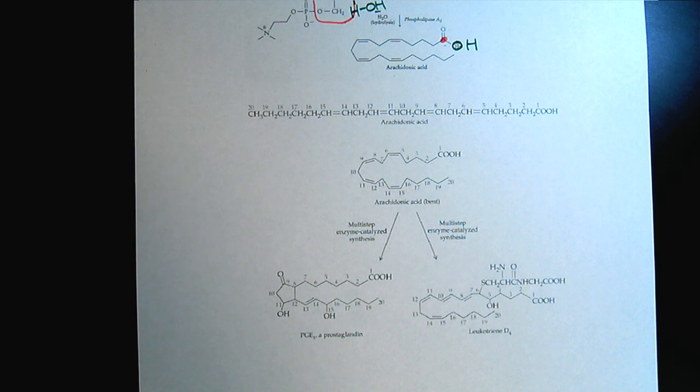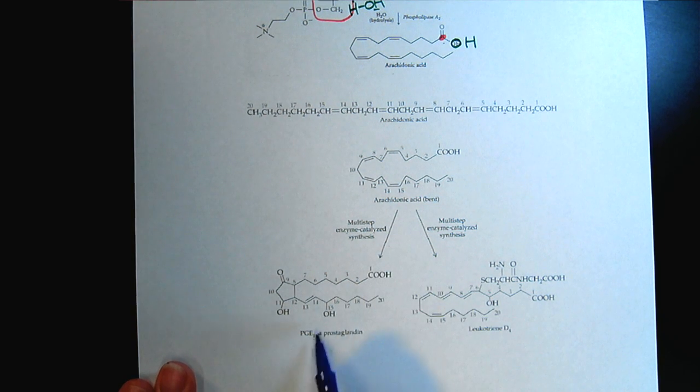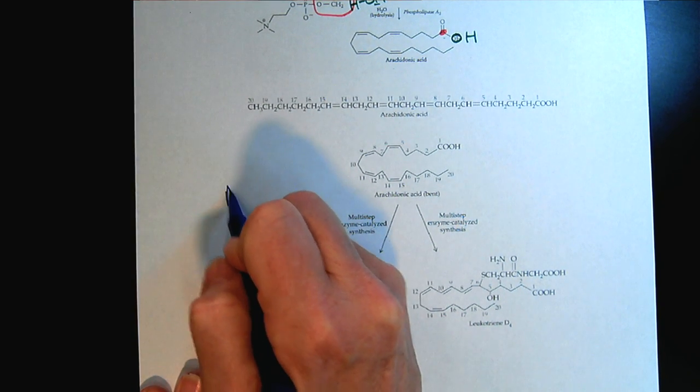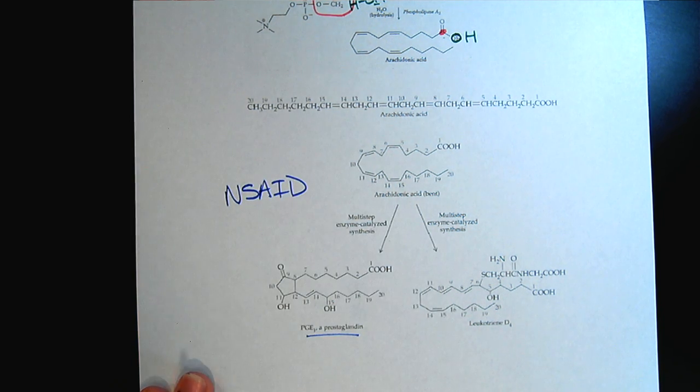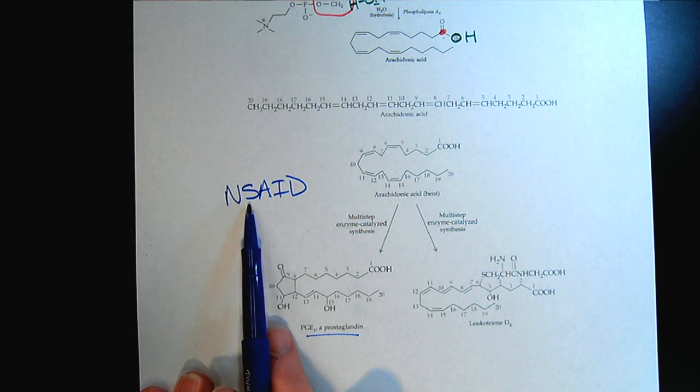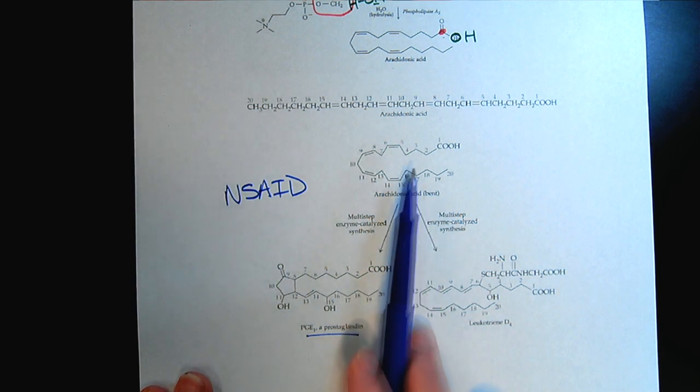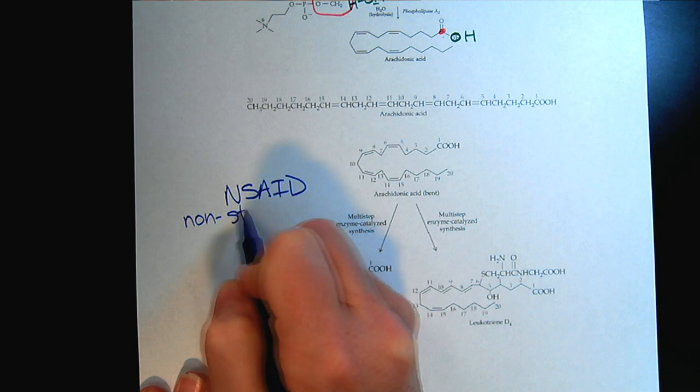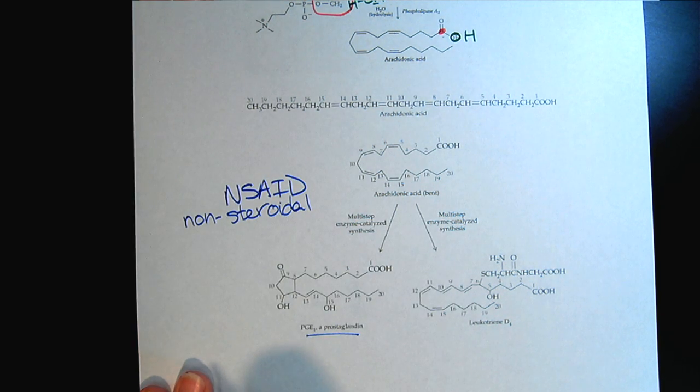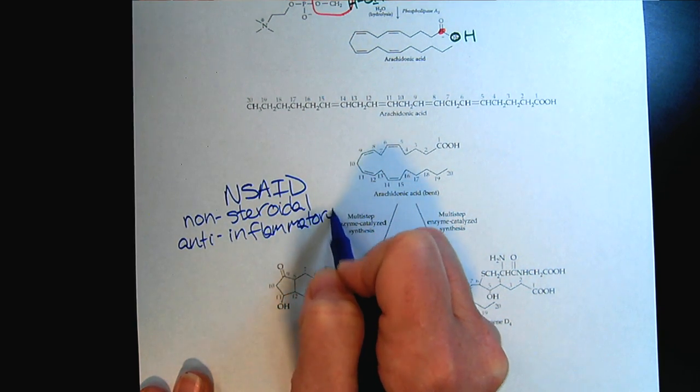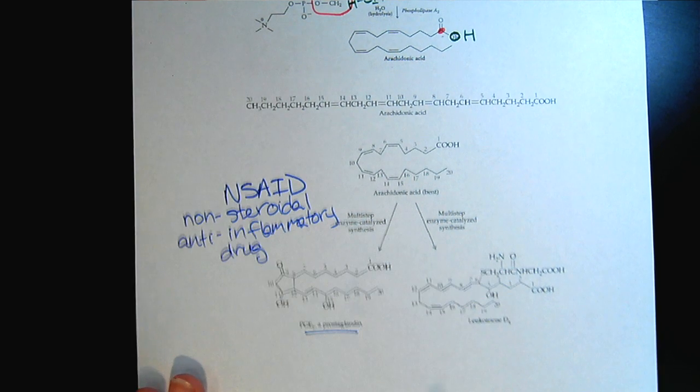Now I want to connect this with what we're learning about drugs. The prostaglandins will actually trigger inflammation. If we're trying to avoid inflammation, we can use drugs called non-steroidal anti-inflammatory drugs. We just talked about cholesterol in the previous video. These are definitely not steroids—there's no fused rings. Let's make sure everybody has this acronym down: non-steroidal anti-inflammatory drugs, or NSAIDs. Aspirin is an example.